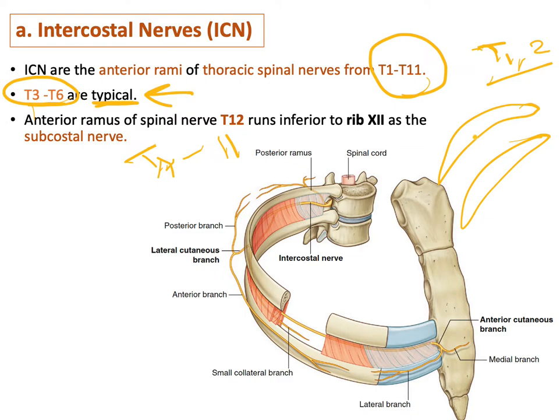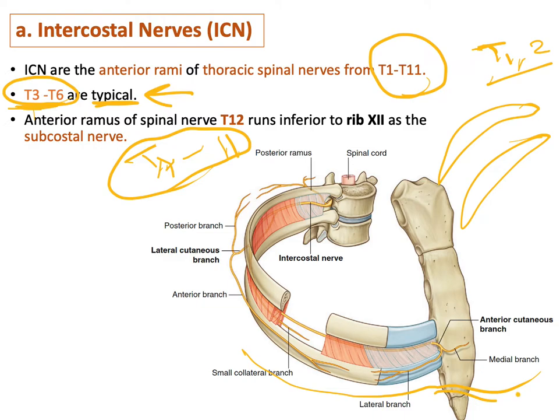T7 to T11 are also atypical because they are close to the anterior abdominal wall. Once they reach the anterior abdominal wall, they continue there to form thoracoabdominal nerves. From T3 to T6, those are the intercostal nerves that pass in the subcostal groove and stop anteriorly — these are the typical ones.